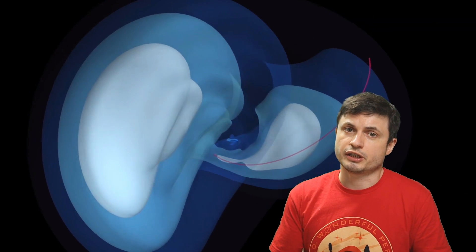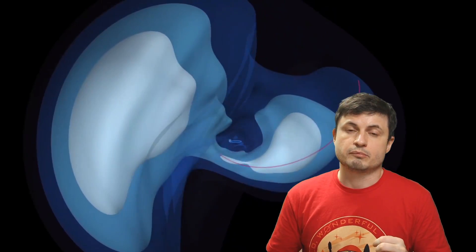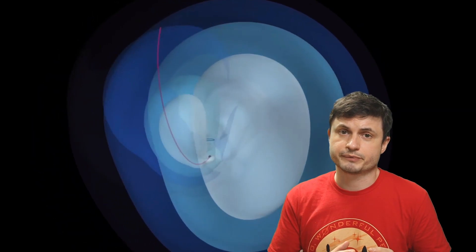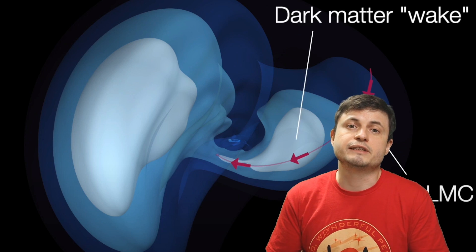But naturally because these are simulations and not actual observations, the scientists now have to try to confirm this by finding something else out there that actually confirms their hypothesis. And to do this, since we can't really see dark matter, you'll have to find something else like stars or maybe gas in this region that would form a relatively similar shape.